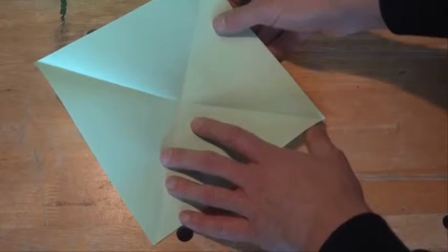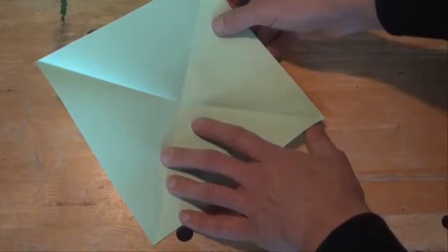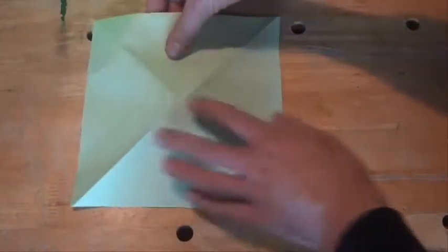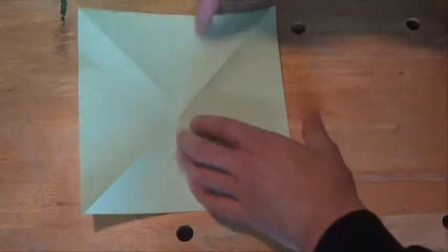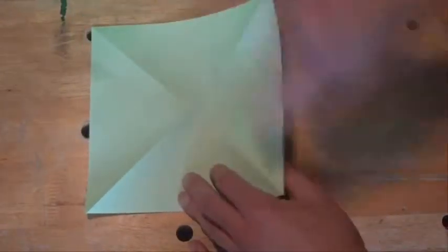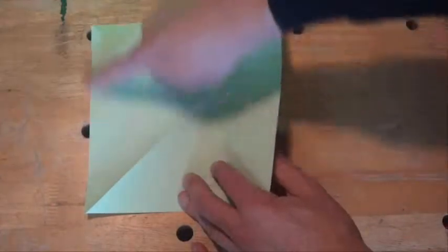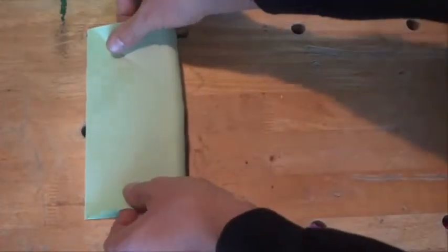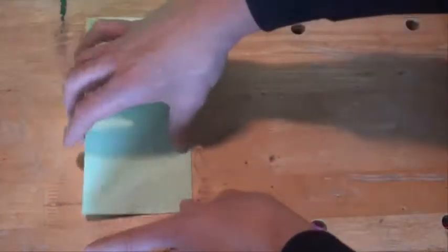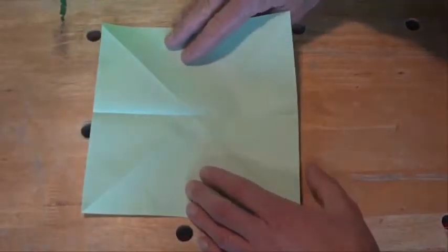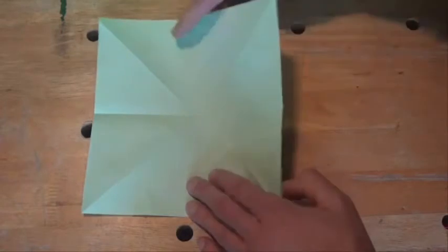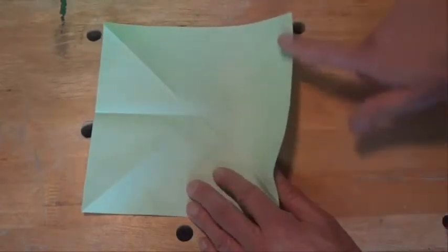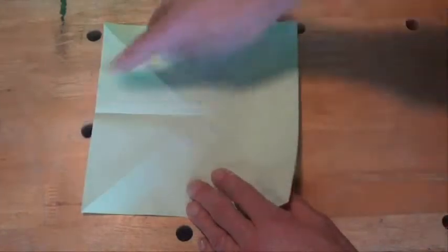Now what we're going to do is, we'll spin that over, and we're going to fold this side across to match up with the other side. And then we'll fold that through the other side, that side across to that side, like so.